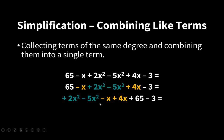2x² and -5x² are like terms, and we combine them into one. We get a shortened and more organized version of the polynomial, which is -3x² + 3x + 62.